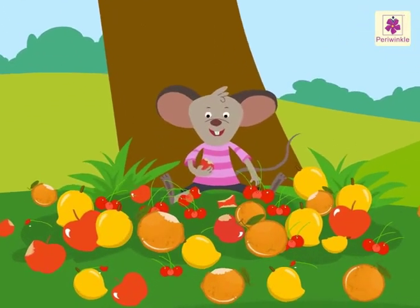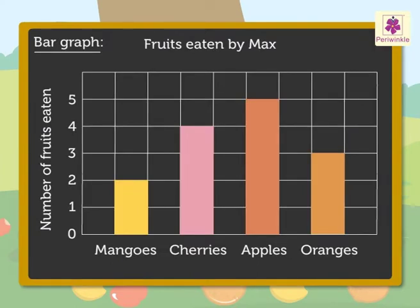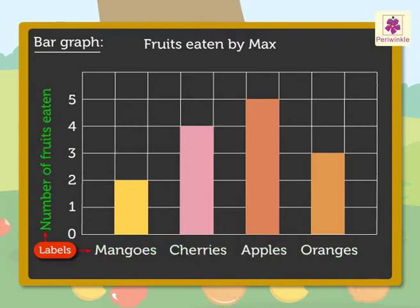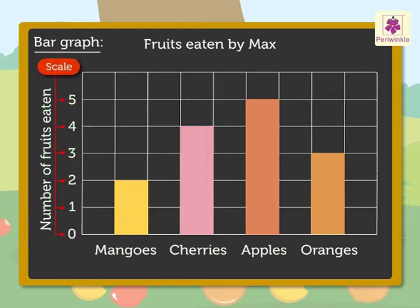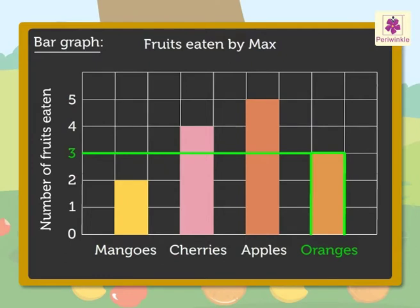Max the mouse ate some fruits. Let's read this bar graph. The title 'Fruits Eaten by Max' tells us the bar graph is about the number of fruits eaten by Max the mouse. The labels tell us that the data is about the kind and number of fruits eaten. The scale tells us the number of fruits eaten. Hence from the bar graph we can say Max ate two mangoes, four cherries, five apples, and three oranges.